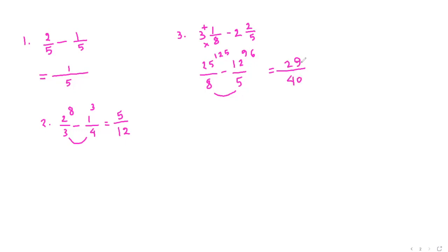Now we have to look if we can reduce it. No. Because there is no number by which we can divide 29 and 40 both. So this is already a proper fraction. We don't have to worry about anything. So we can leave the answer like this. Thank you for watching.